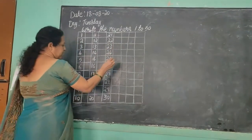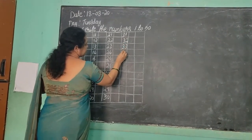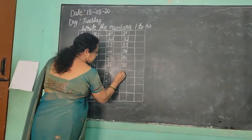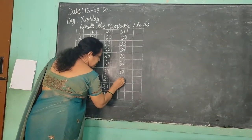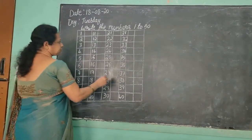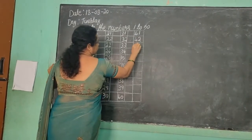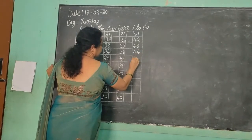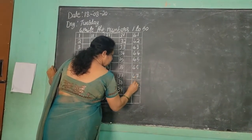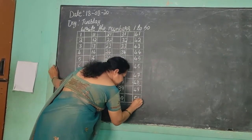Again view one box and write. 3, 1 — 31. 3, 2 — 32. 3, 3 — 33. 3, 4 — 34. 3, 5 — 35. 3, 6 — 36. 3, 7 — 37. 3, 8 — 38. 3, 9 — 39. 4, 0 — 40. 5, 0 — 50. Now one second, see the box.